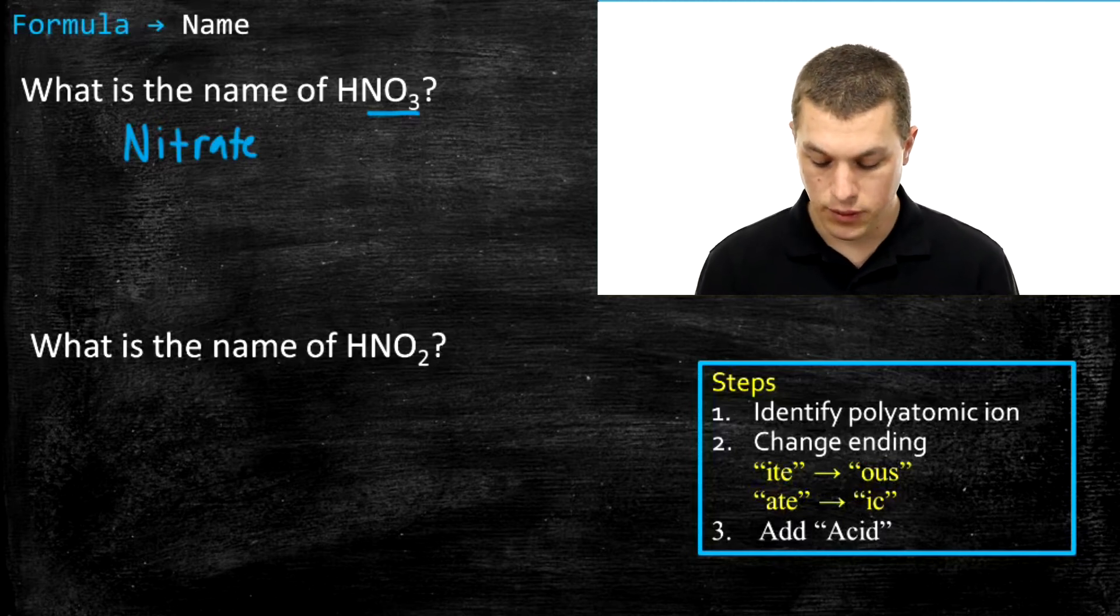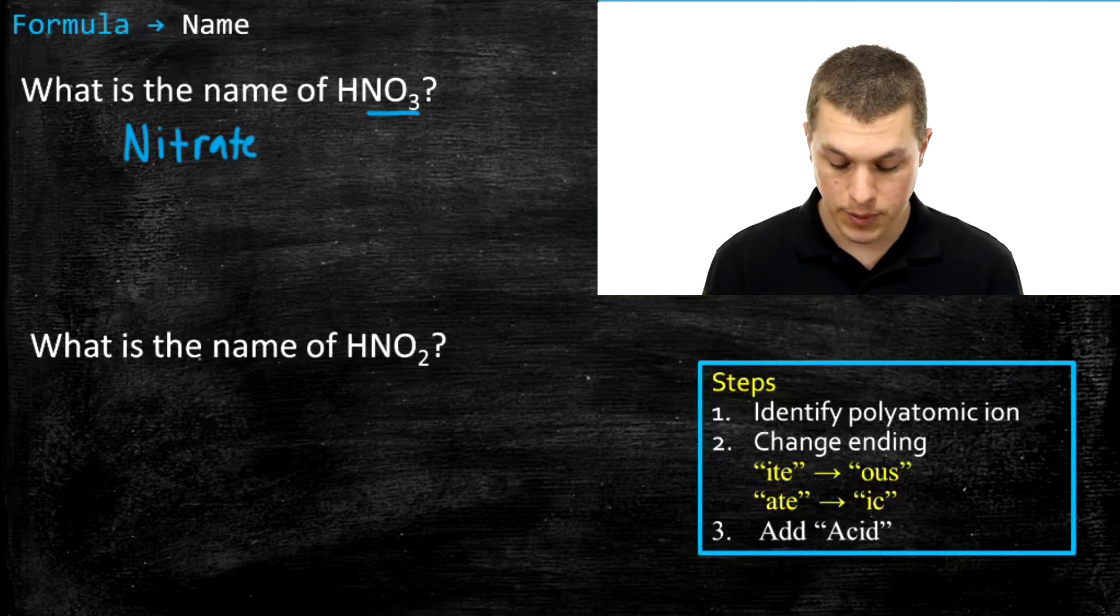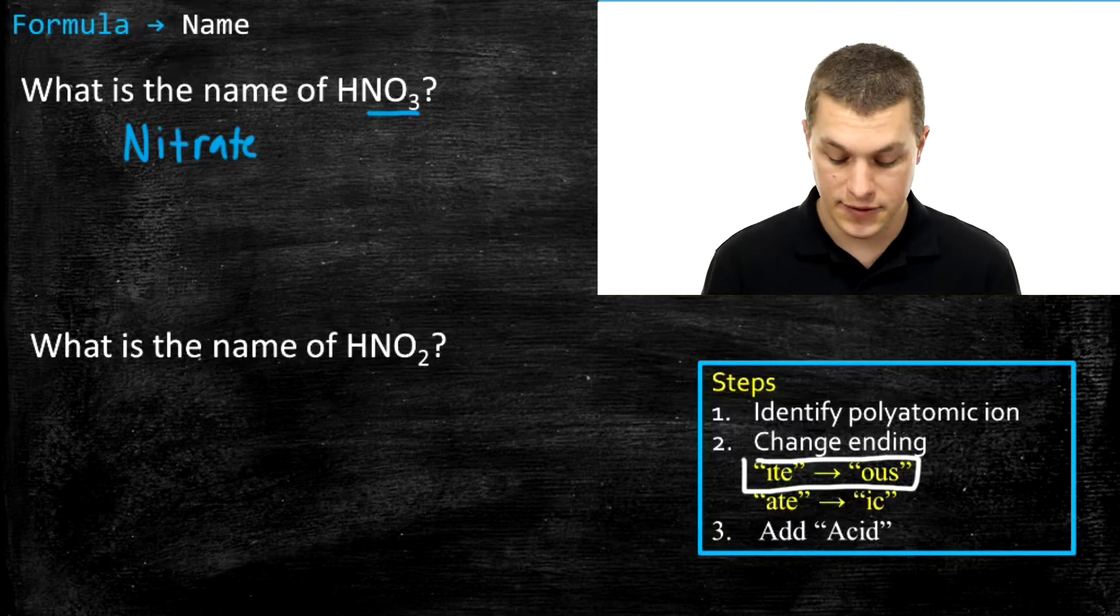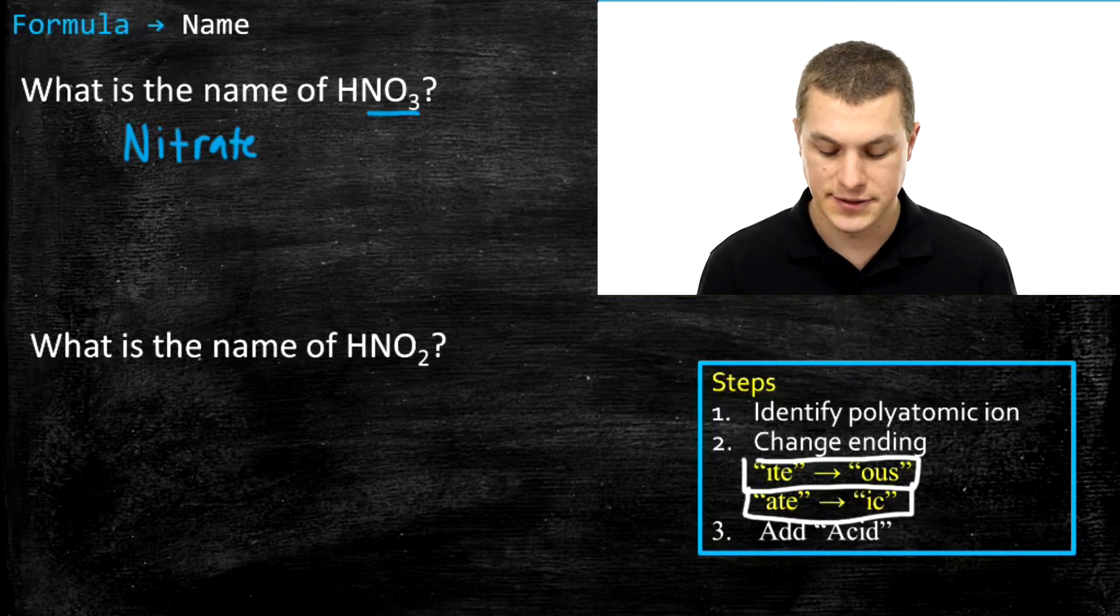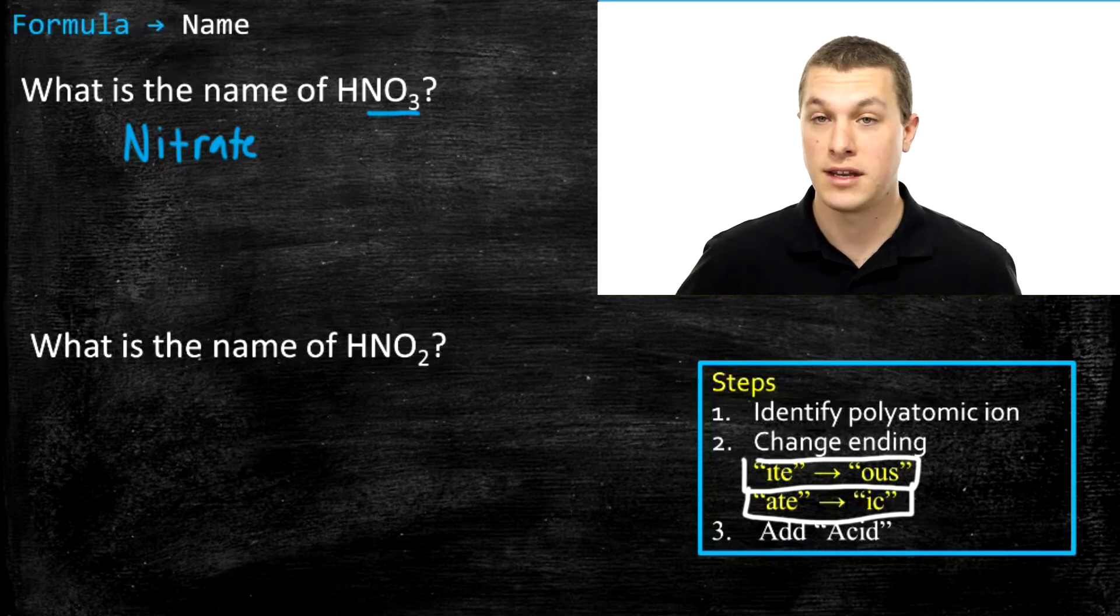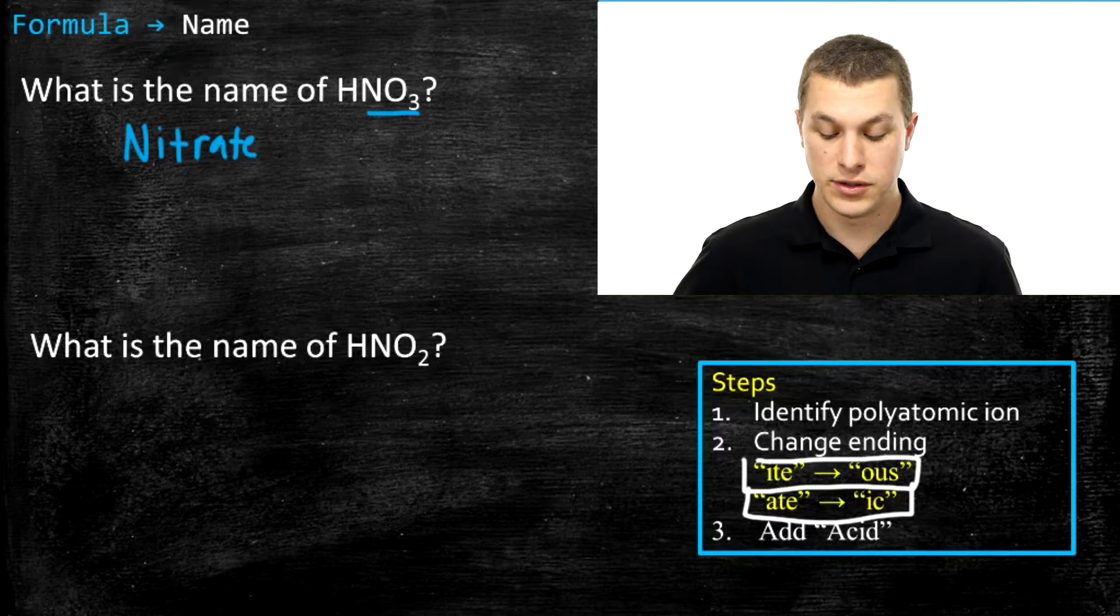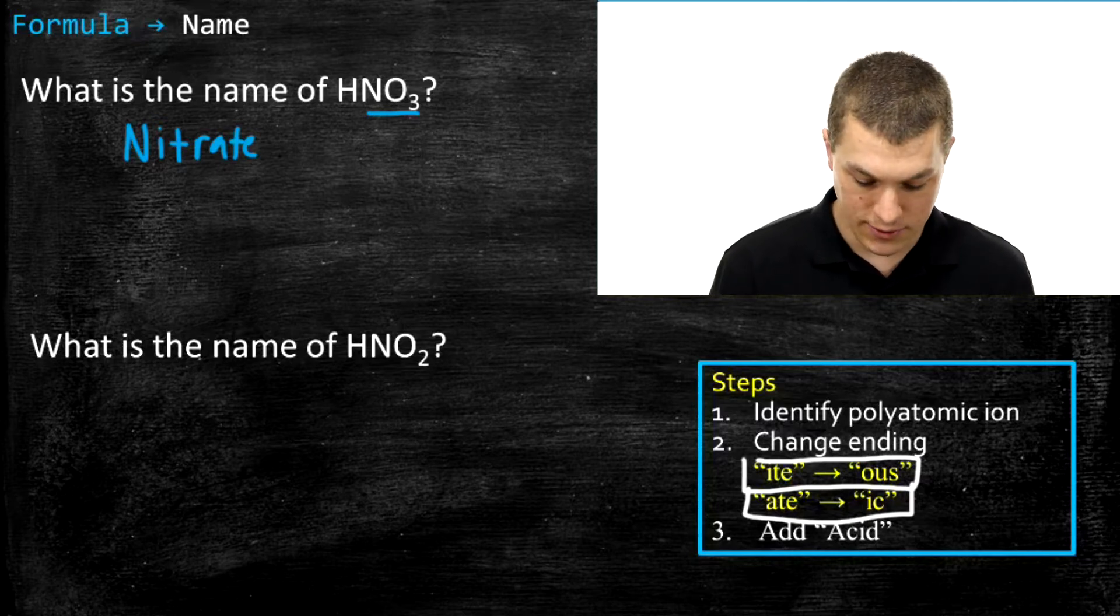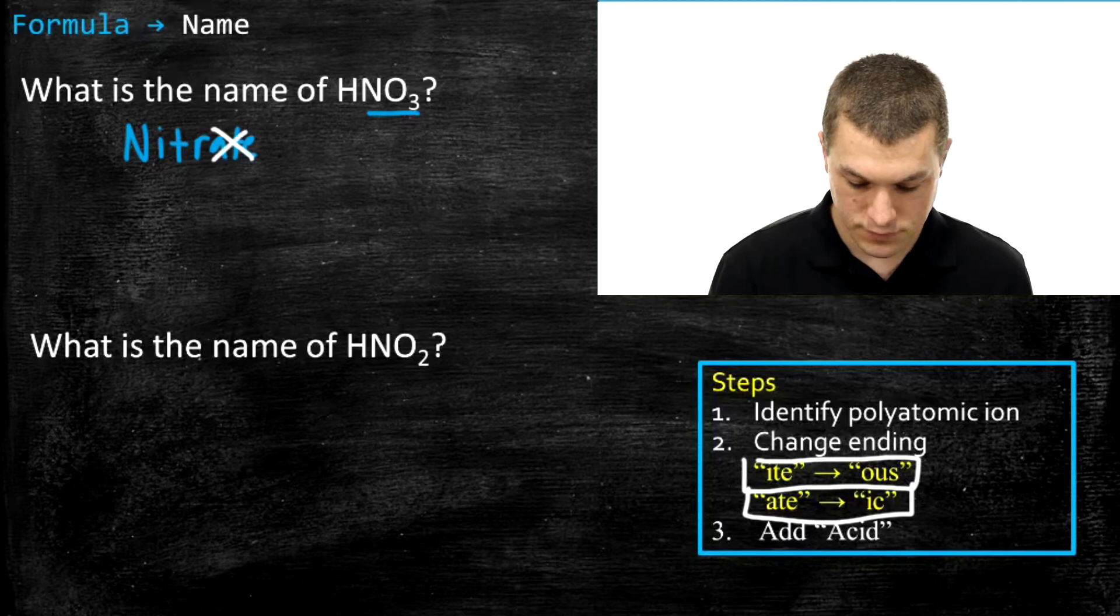Now what we do is we change the ending of our polyatomic ion name. The rules depend a little on what your ending is. If your polyatomic ion ends in -ite, you change it to -ous. If your polyatomic ion ends in -ate, you change it to -ic. That's basically the way we name these oxyacids. We just write the name of the polyatomic ion, change the ending, and add acid. In this case, we can see that our nitrate ends in -ate, which means we're going to change that -ate to -ic. So we get rid of this -ate part, and instead we write nitric.